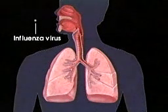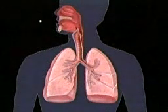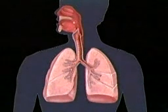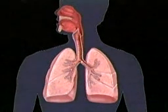People breathe the influenza virus into their lungs, where it enters the cells that line the air passages. The invading virus turns infected cells into virus reproduction factories. Infected cells burst as they become completely filled with viruses, and each virus from a ruptured cell then becomes able to infect another cell.